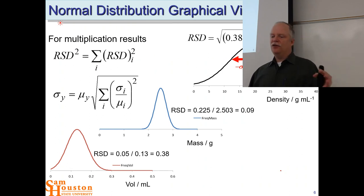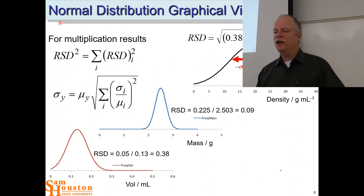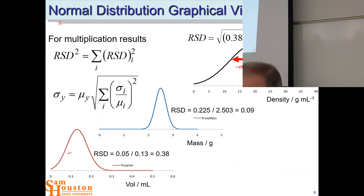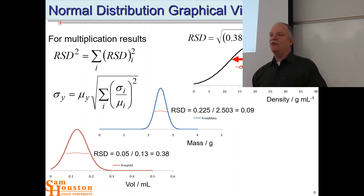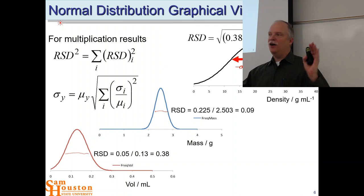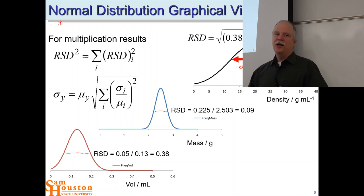This is a graphical view of our relative standard deviations. The width of our volume measurement distribution is wider than our mass measurement's distribution. We have 0.38 as our relative standard deviation for volume and 0.09 for mass. When these combine, we get a combined relative standard deviation of 0.39. That 0.39 is very close to the 0.38 of volume — so volume is dominating our uncertainty. If we could narrow the volume measurement by using a better graduated cylinder, we would improve this experiment and might be able to identify what kind of metal it is.